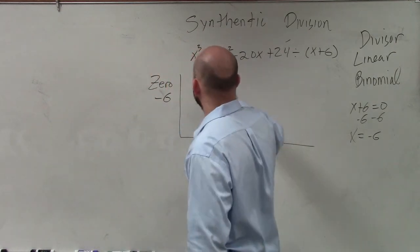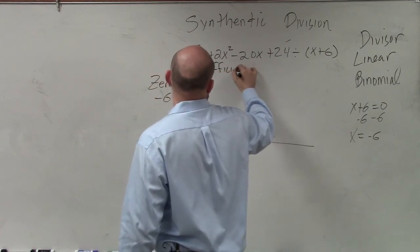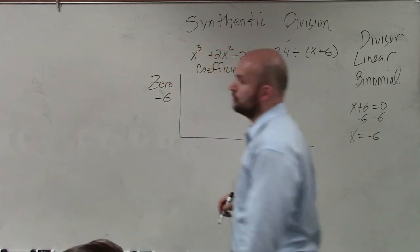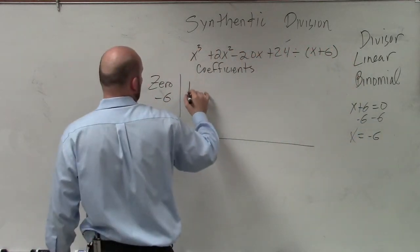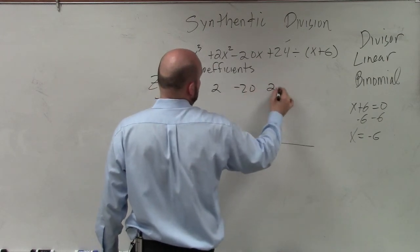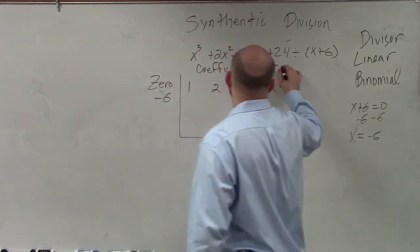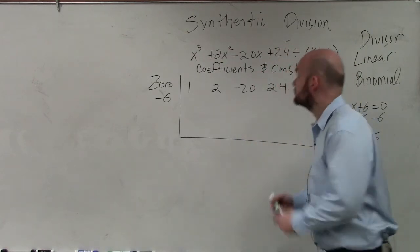Then, what we basically do is, we take the coefficients. We take the coefficients, and we bring them down. So, the first coefficient I have is one, two, negative 20, and 24.